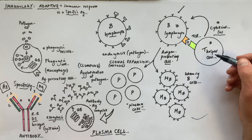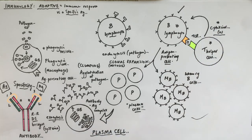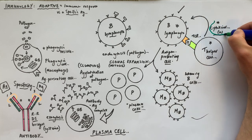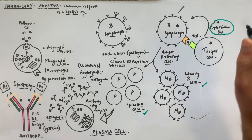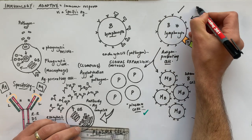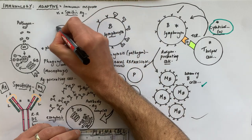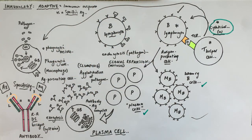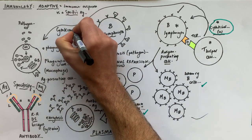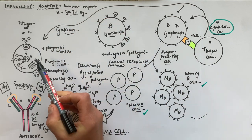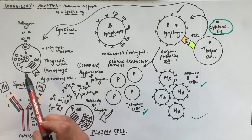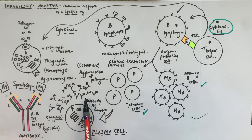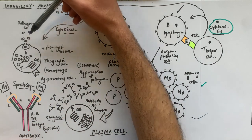The T helper cell secretes cytokines that help activate the B lymphocyte and promote clonal expansion into memory B cells and plasma cells. The cytokines also attract more phagocytic cells to the infection site. These cytokines are really important within the adaptive immune response: we've agglutinated the pathogen via antibody secretion from plasma cells, but we need phagocytic cells to clear the pathogen.